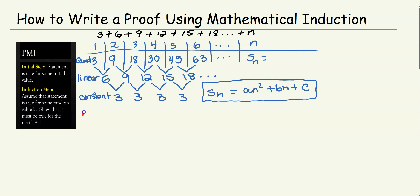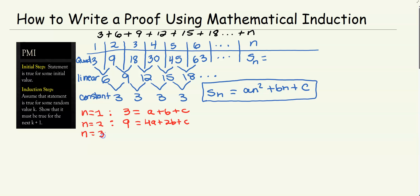When n is 1: 3 = a + b + c. When n is 2: 9 = 4a + 2b + c. When n is 3: 18 = 9a + 3b + c. Now we have a system of three equations to solve, and elimination would be the best method.